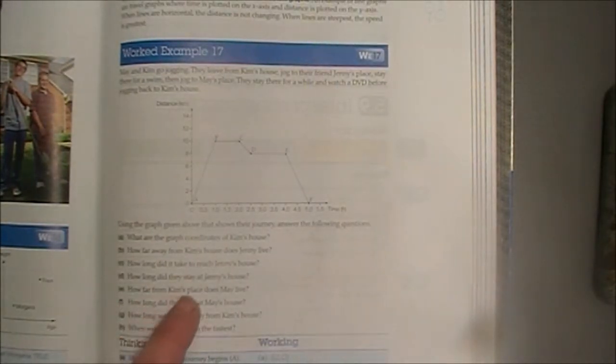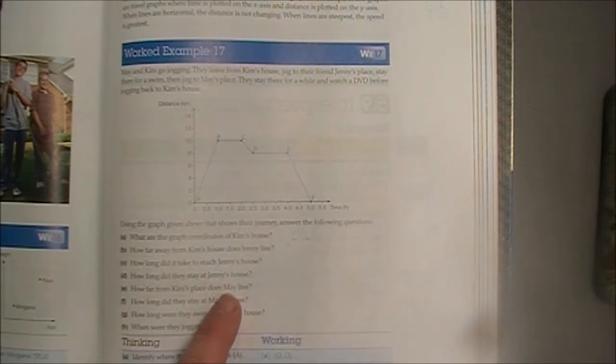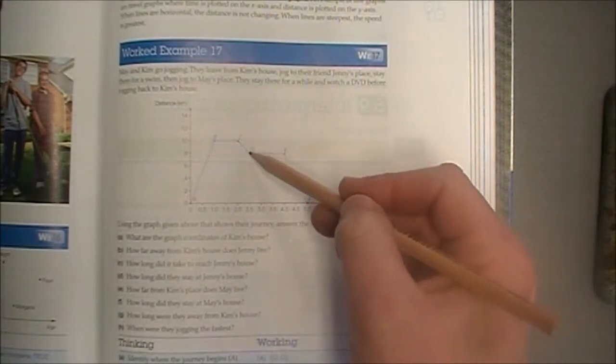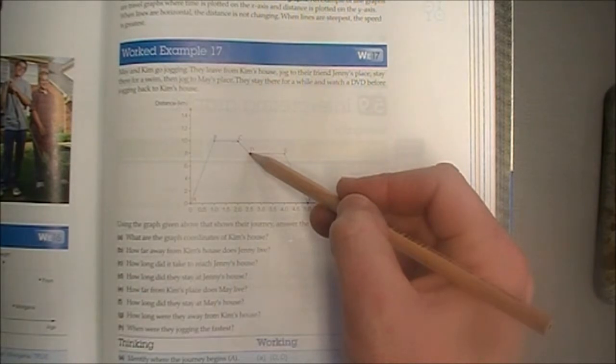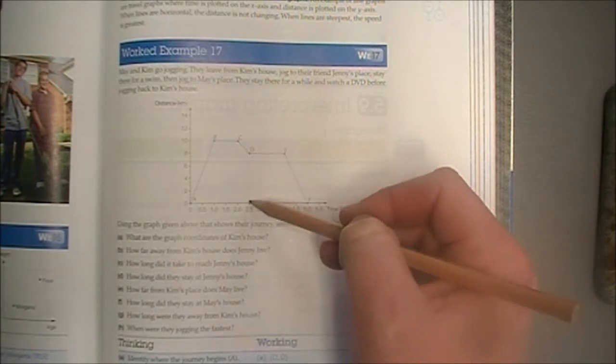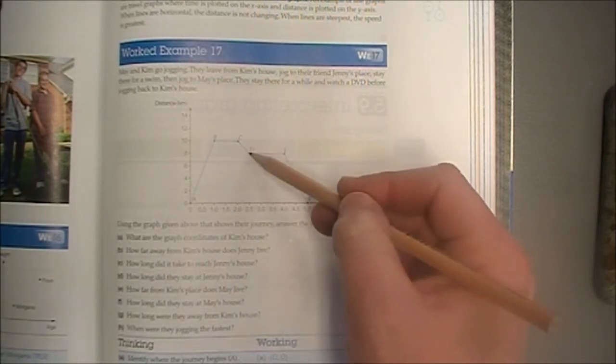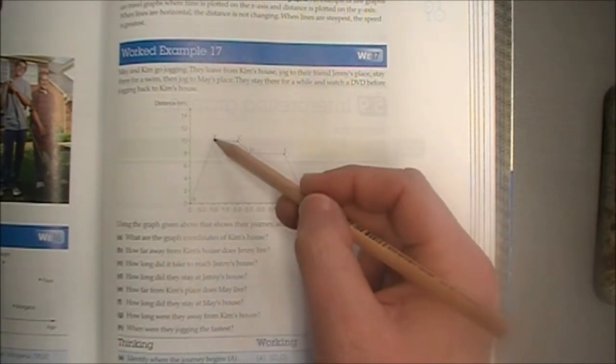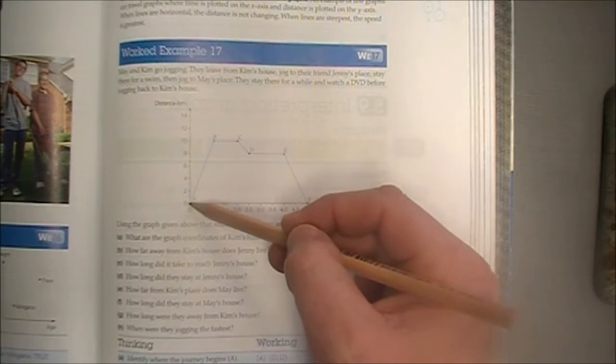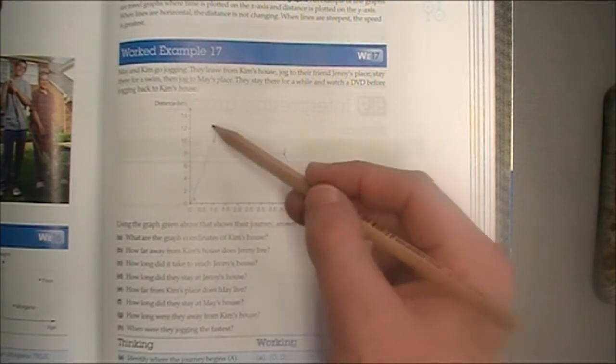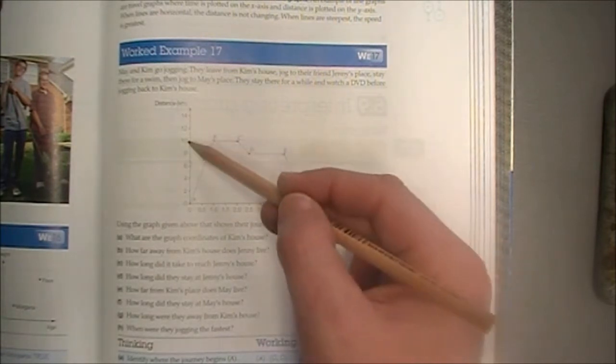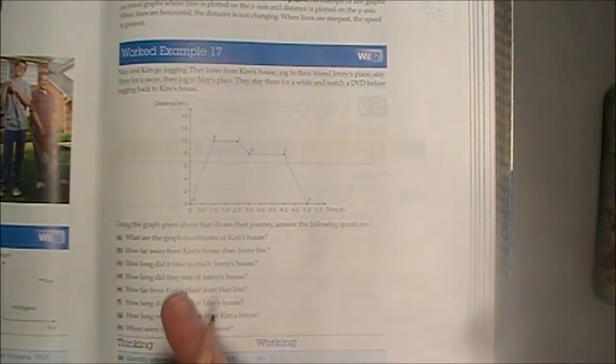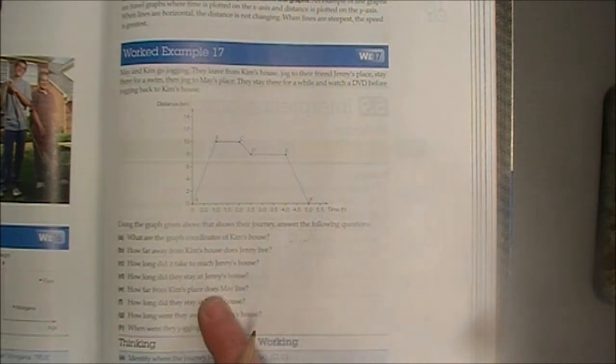E. How far from Kim's place does May live? So Kim's place is where we started. May is the second house we went to, which is there. So we know what is this distance here, which is 8 kilometres. We also know that they travelled 10 kilometres to get from Kim's to Jenny's house. Then they did this jog back, the 2 kilometres back. 10 minus 2 is 8 kilometres. So Kim's place is 8 kilometres away.